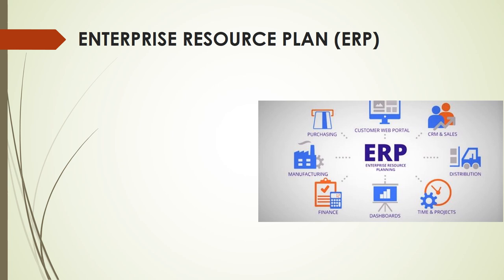Now let's talk about Enterprise Resource Planning or ERP. Looking at the picture, you see ERP connected to a customer web portal, CRM and sales, distribution, time and projects, dashboards, finance, manufacturing, and purchasing. Imagine all of these elements are independent systems — we have a CRM system, a distribution system, a finance system. The goal of ERP is to connect all of those systems into one cohesive, large system so that we can integrate from CRM to manufacturing, from finance to customer, to distribution, to purchasing. That is the goal of an Enterprise Resource Plan.